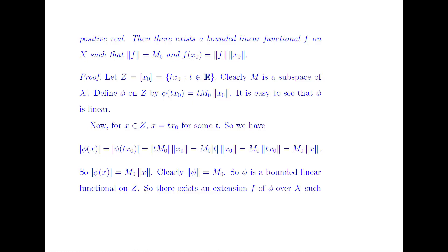Clearly this is a subspace of X. We define φ on Z by φ(tX₀) = t · M₀ · norm(X₀). It is easy to see that φ is linear. For X belonging to Z, we have X = tX₀ for some scalar t. We consider the modulus of φ(X) = modulus of φ(tX₀).